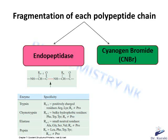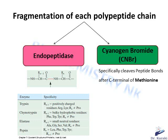Cyanogen bromide is the chemical agent we can also use to fragment a polypeptide chain. It cleaves specifically the peptide bond at the carboxyl end of methionine — that is, just after methionine.